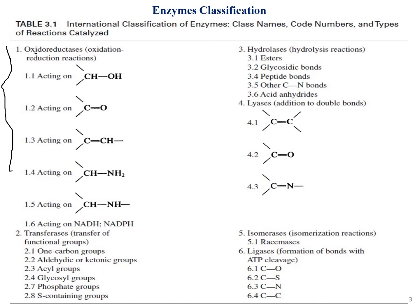Now here is a classification of the different types of enzymes. First, oxidoreductases carry out oxidation-reduction reactions, acting on C=O, C-CH, C-NH₂, and C-NH groups. Second, transferases carry out the transfer of functional groups, which can include one-carbon groups, aldehyde or ketonic groups, acyl groups, glycosyl groups, phosphate groups, and sulfur-containing groups. Third, hydrolases catalyze hydrolysis of esters, glycosidic bonds, peptide bonds, and other C-N bonds.